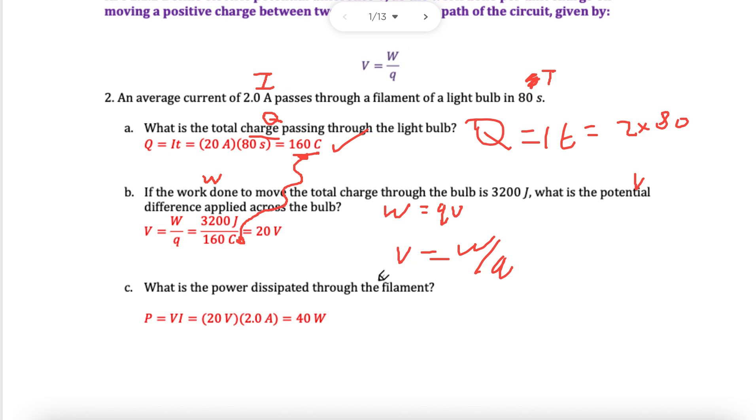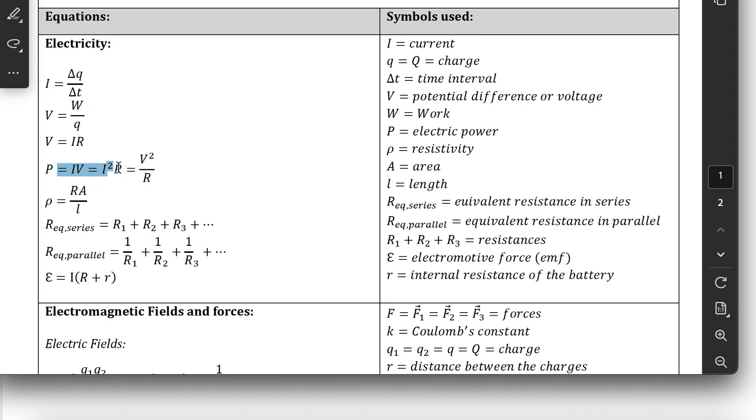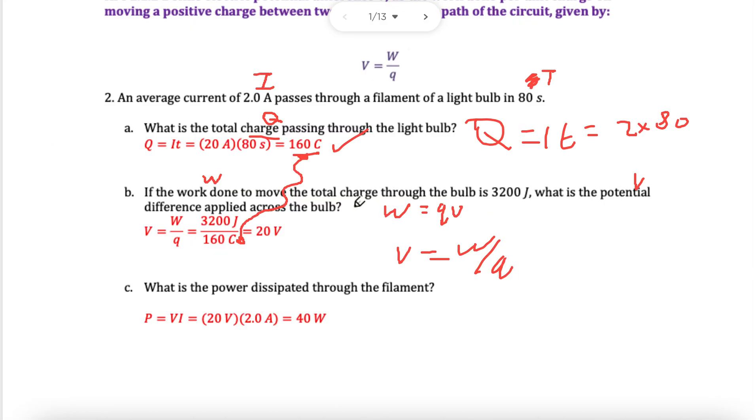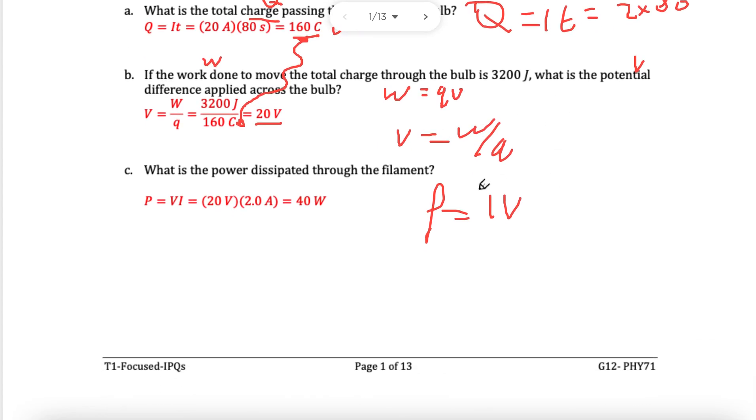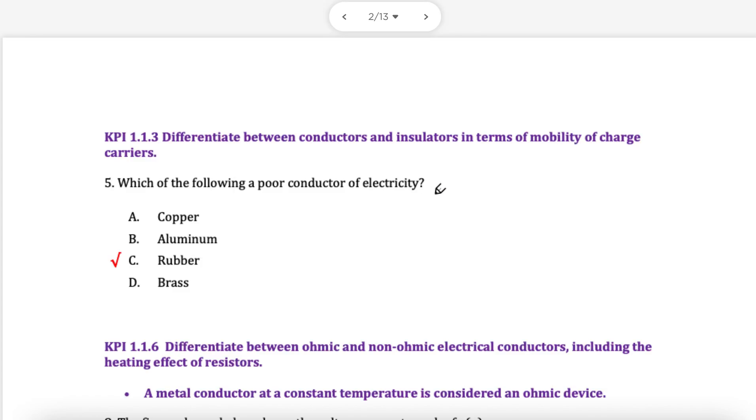Next is asking for power dissipated through the filament. So power, we have these three choices. IV, I squared R, V squared over R. Three choices, you'll get the same answer no matter what you pick. In this case, well, we have V and we have I. So I can just use PIV, P equals IV. I will multiply 2 with 20. That's it. If we had a resistance, we could have done it. If you wanted to, you could have found the resistance and then done it, but that's pointless. Because we have a formula directly that will give us power.